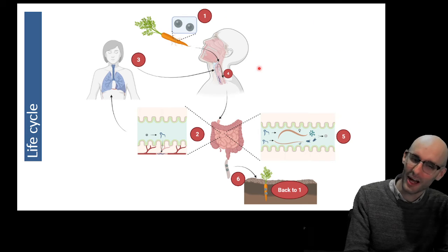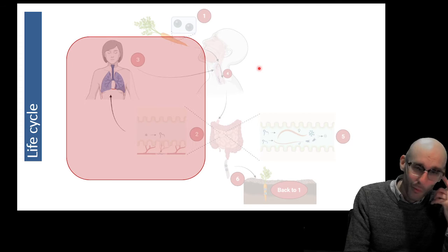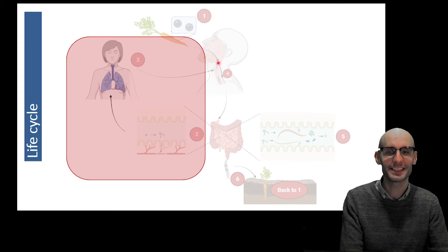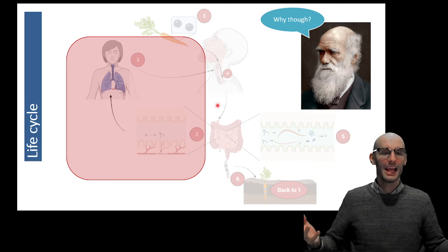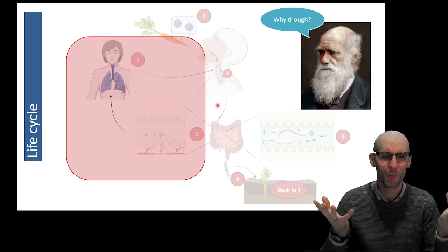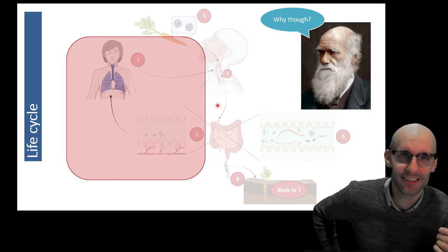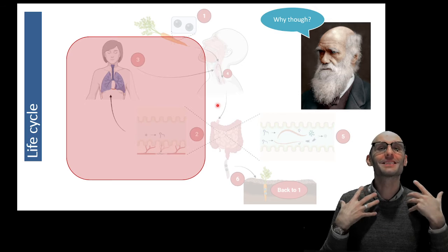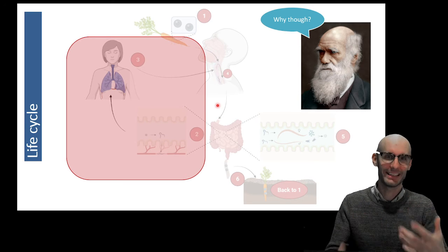Now you might look at this life cycle and just go, what is going on with this part of it? All of that just to get back into the intestine. If you were Darwin you'd be like, why though? Why? You're just going to end up back in the intestine.